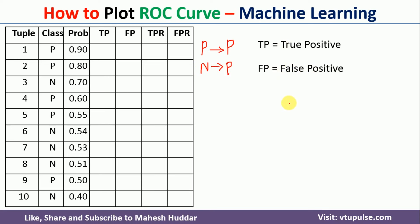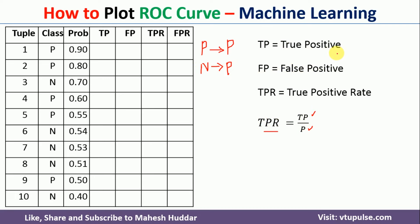Once you know these two parameters, you can easily calculate TPR. TPR is equal to TP divided by P, where TP is true positive and P is the number of positive examples. To calculate FPR, FPR is nothing but false positive rate, which is equal to FP divided by N, where N is the number of negative examples.